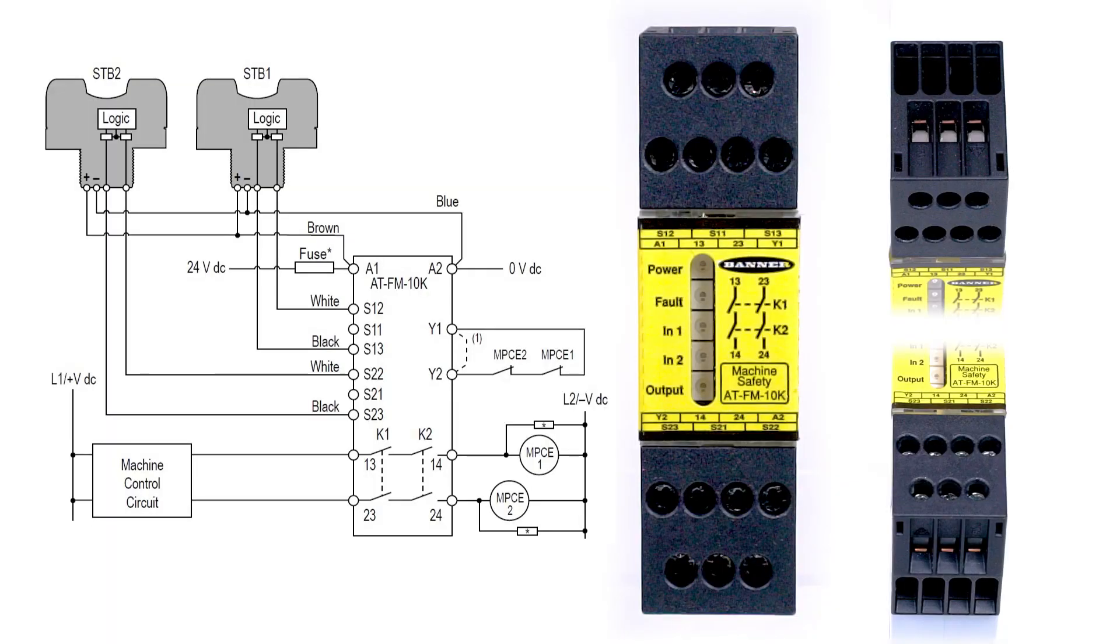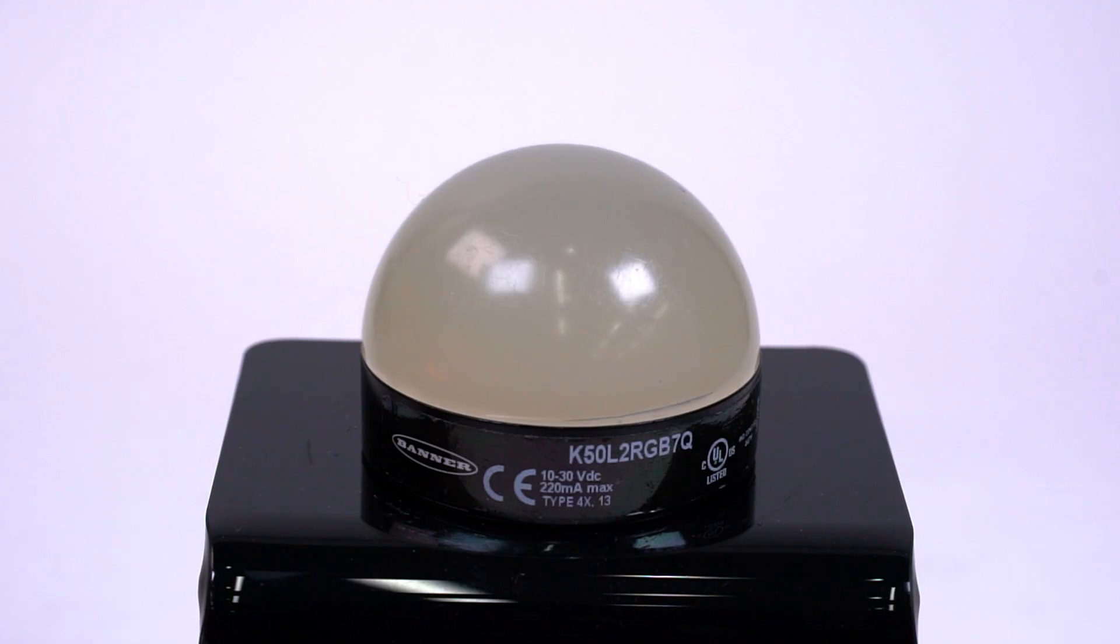The relay module's safety outputs are provided via Terminals 13 and 14 and 23 and 24. Connect the machine control circuits to the first terminal of each pair and connect your machine contactors to the second terminal of each pair. To simulate this, we are using a separate power supply and a K50 indicator.